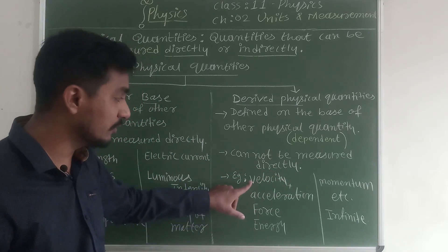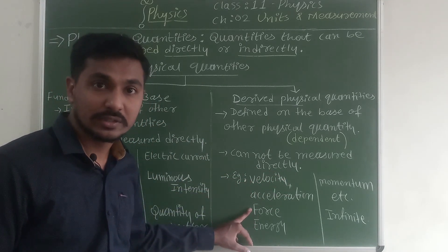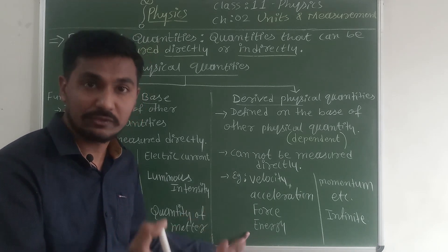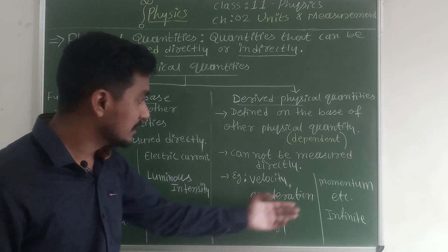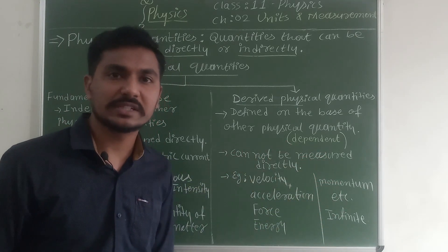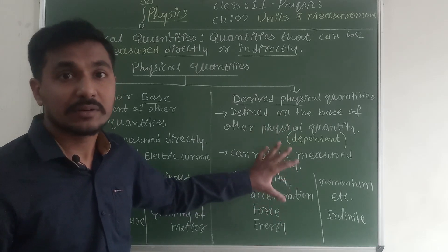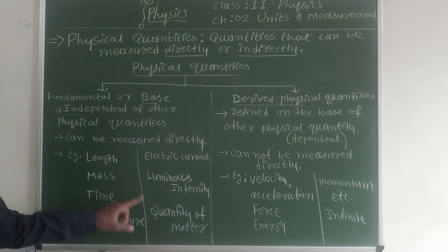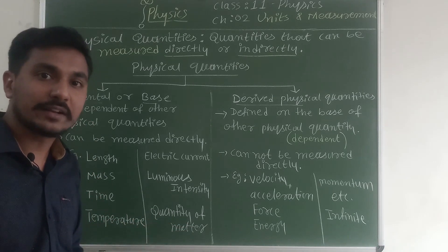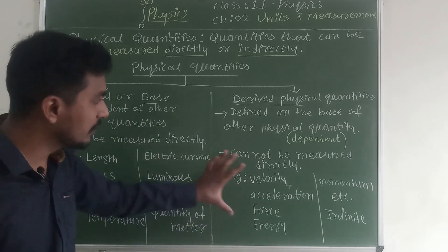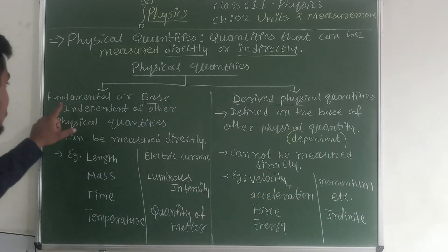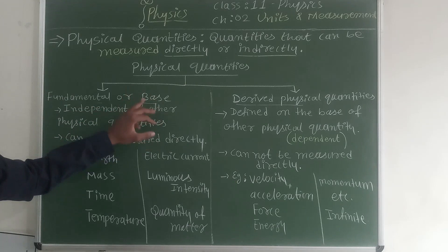Similarly, acceleration — to define acceleration you need velocity and time. Similarly, force: F = ma, so you need mass and acceleration. Similarly, energy: kinetic energy is ½mv², potential energy is mgh. Momentum is mass into velocity. If you make a list, you will have an infinite number of physical quantities dependent on the seven fundamental quantities. Scientists have shortlisted these seven quantities so we can derive all others from them — hence those are called derived physical quantities.